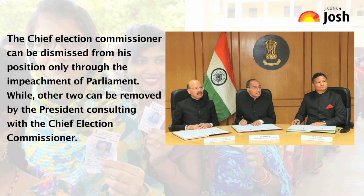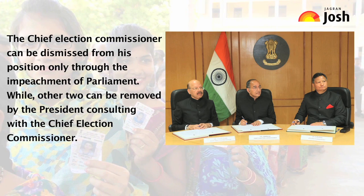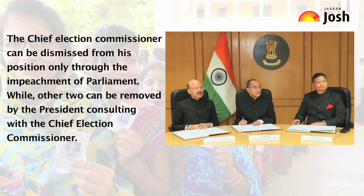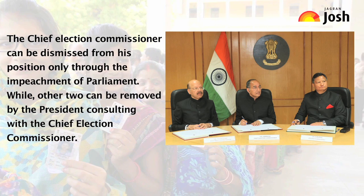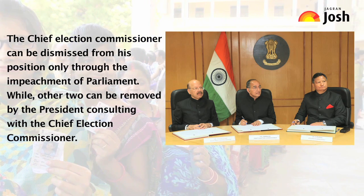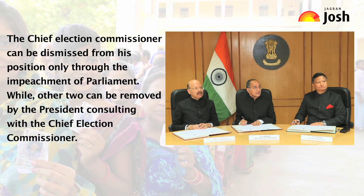The Chief Election Commissioner can be dismissed from his position only through impeachment by Parliament, while the other two commissioners can be removed by the President in consultation with the Chief Election Commissioner.